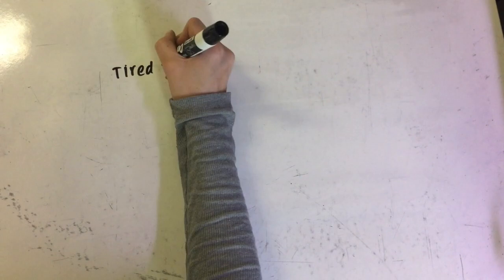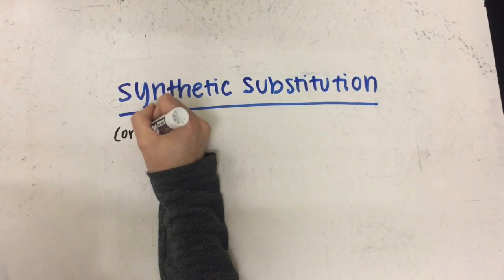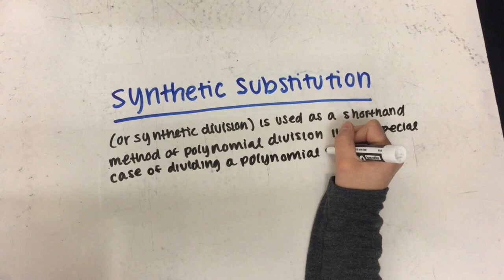Tired of spending so much time trying to solve polynomial division by long division? Want to use a shortcut? Use synthetic substitution! Synthetic substitution, or synthetic division, is used as a shorthand method of polynomial division in the special case of dividing a polynomial function by a linear factor.